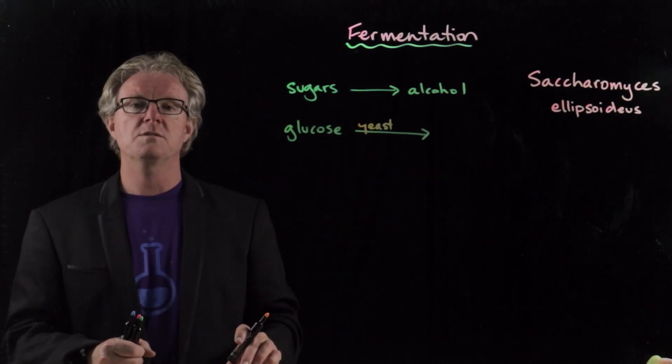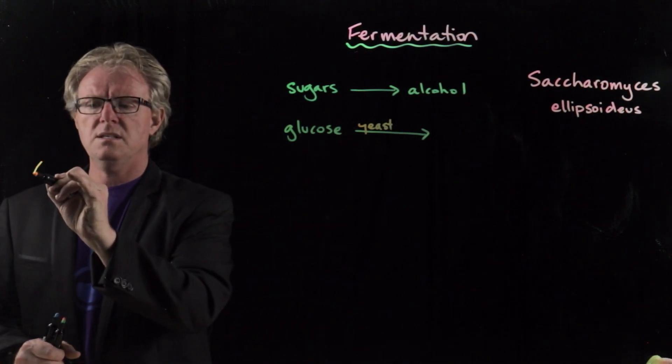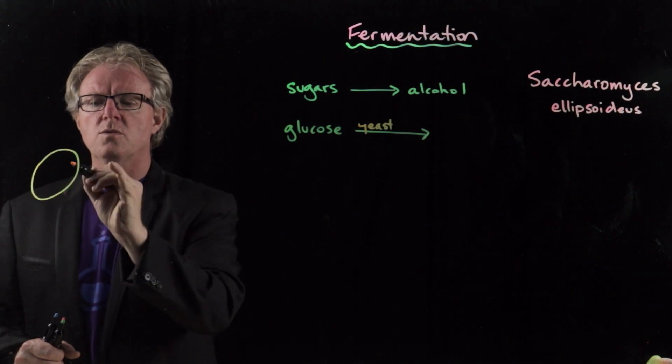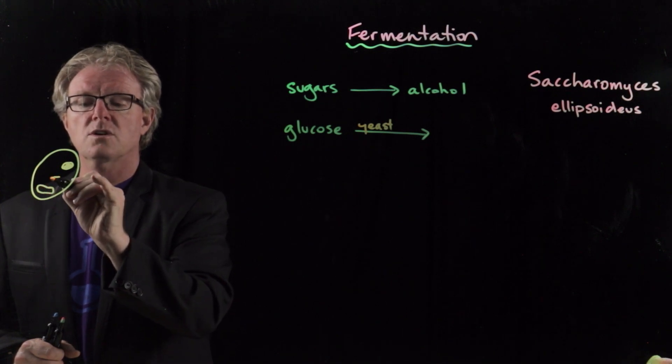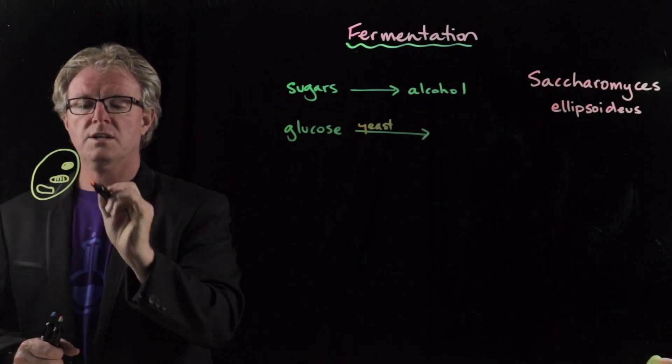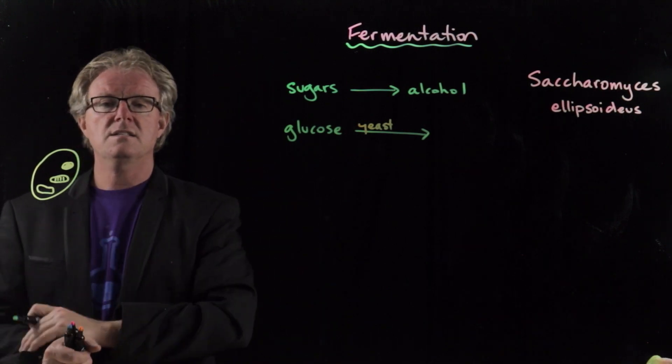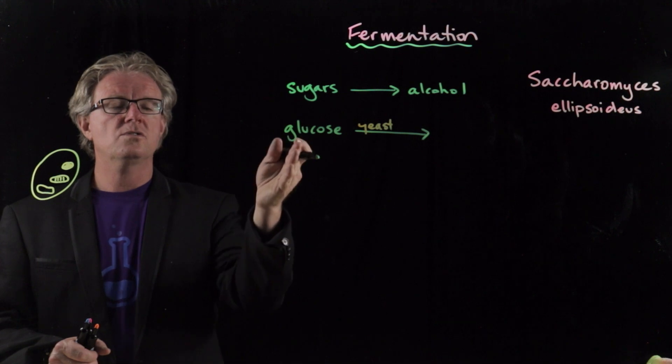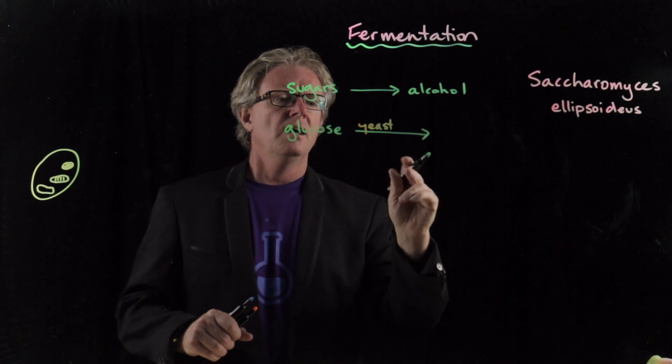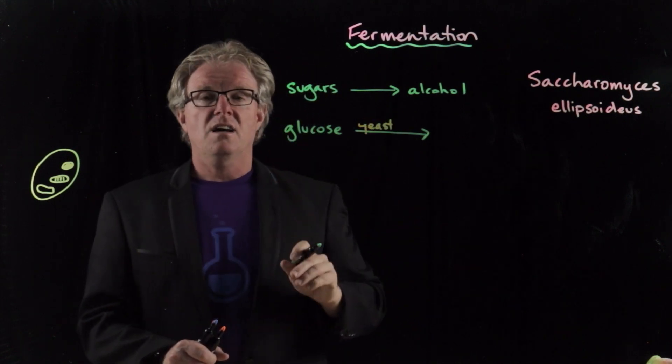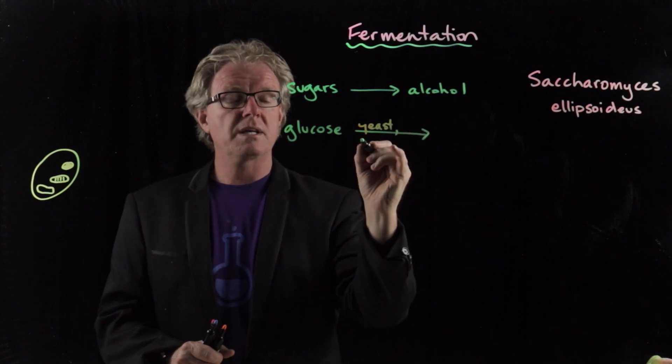Now the reason why we need yeast is because the yeast contain the enzymes that convert the glucose into the alcohol. Okay, and there's lots of different enzymes in this process. But we're just going to write yeast. Now what a yeast is, a yeast is a eukaryotic organism. It's got a nucleus and it's got a vacuole. It's got a mitochondria. Okay, and so it is a eukaryote and it contains the enzymes that we're going to use to convert glucose to sugars.